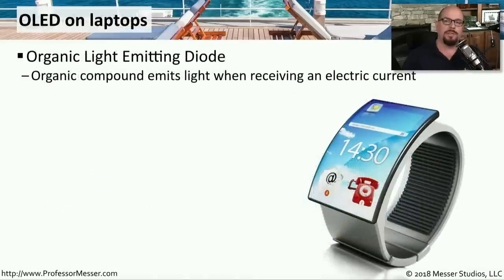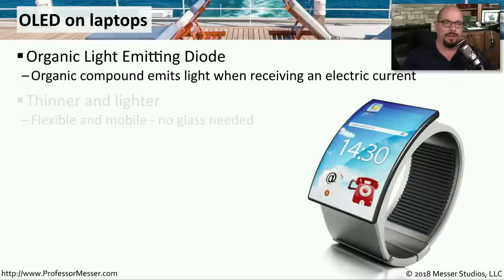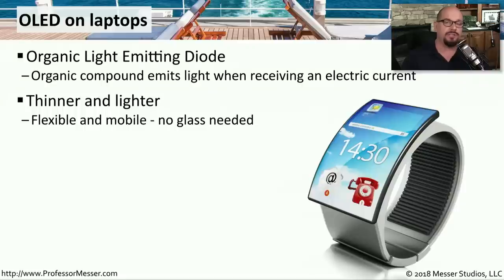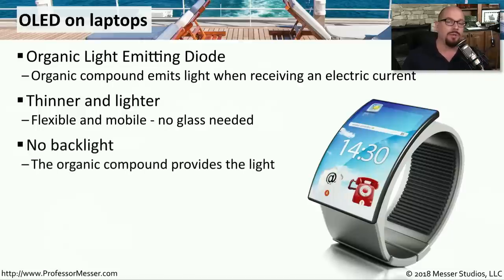One way to get around some of these problems with color representation is to use a different type of laptop display called OLED, which stands for Organic Light Emitting Diode. An OLED is an organic component that lights up when you provide it with an electric current. These are usually very thin and very light screens. It doesn't require a glass to protect it on the front, and because it's lighting itself, it doesn't require a backlight. That means you have very good color representation, especially with true blacks — when there is simply no color, you don't provide any electric current and everything stays black.